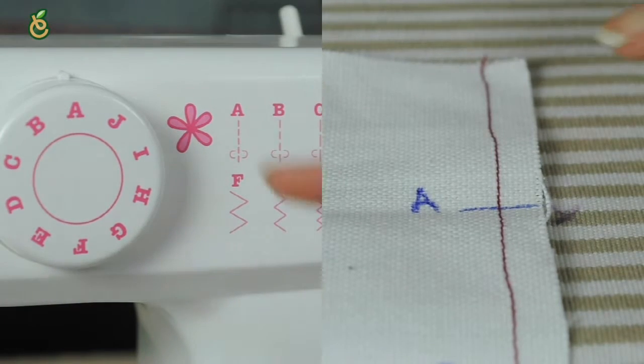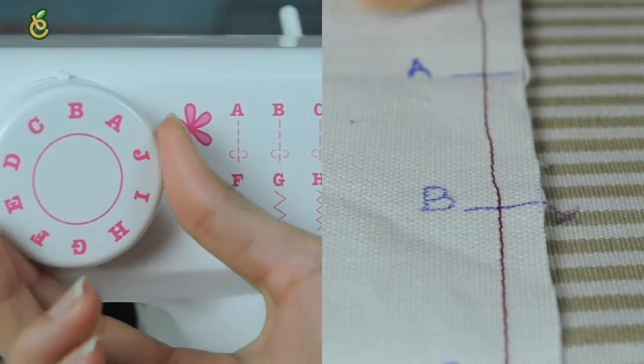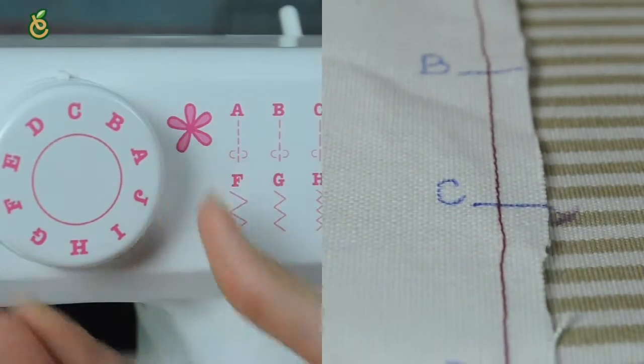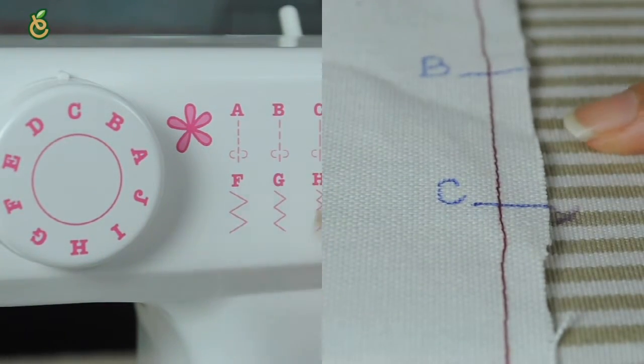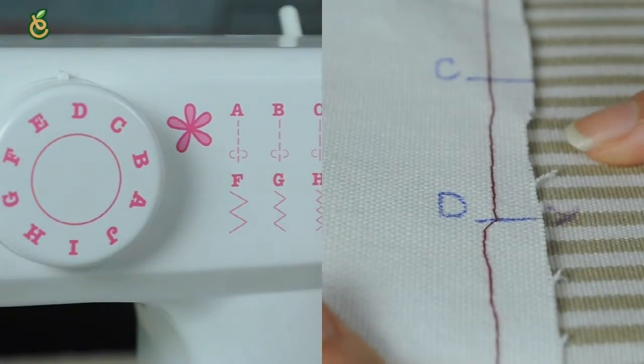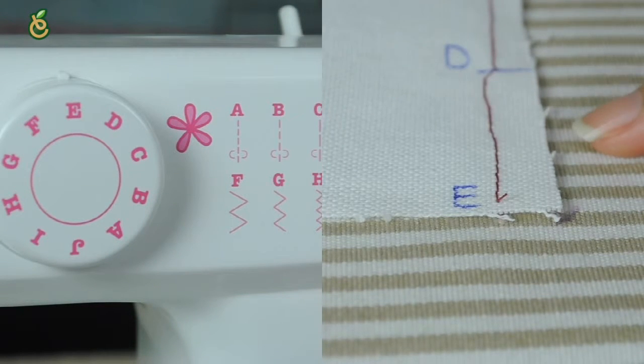I will show you how to use the stitch selector. But remember to raise the needle above the fabric first. To select the stitch pattern, turn the dial to select the desired pattern by setting the symbol letter at the setting mark.